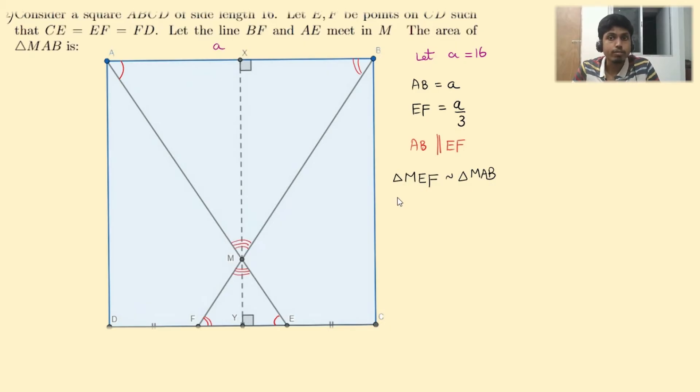The height of triangle MEF is MY. So we get MY upon MX. This is actually the height from the vertex M of the triangles, which should equal the side length ratios. So that is EF upon AB. EF is A by 3, so substituting it, we get A by 3 upon A, which is one third.